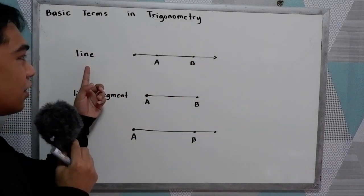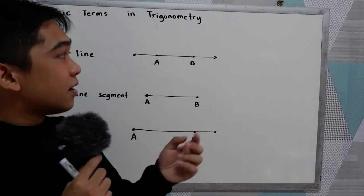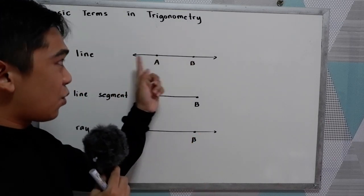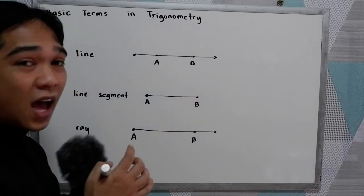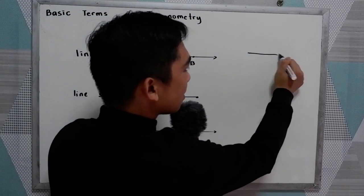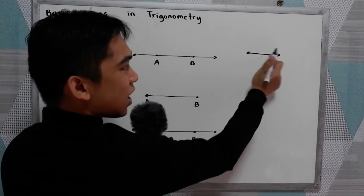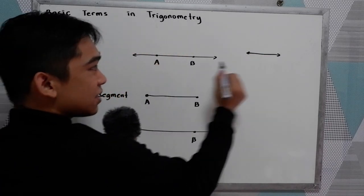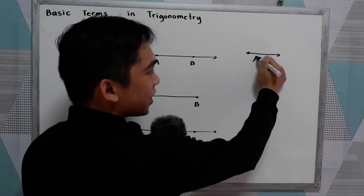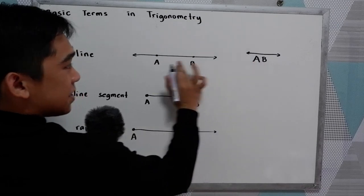We have the line. We know that two points determine a line. Let's say we have points A and B and we have a line. To name a line, we use the symbol with two arrowheads, then name the points. So this is line AB.